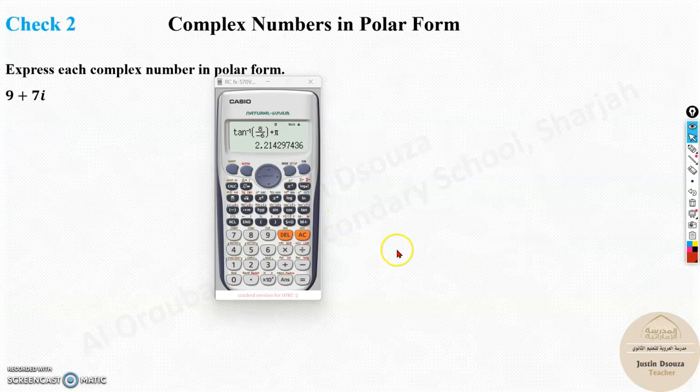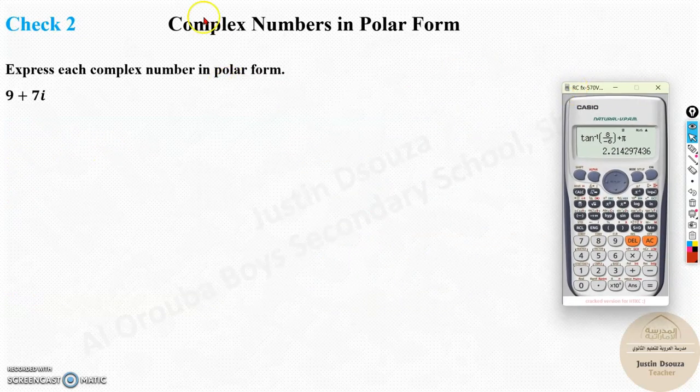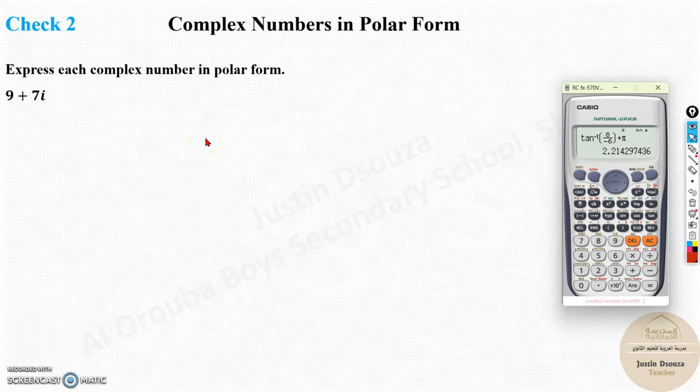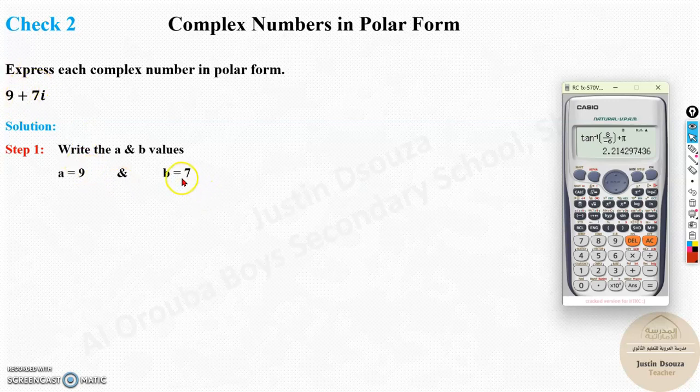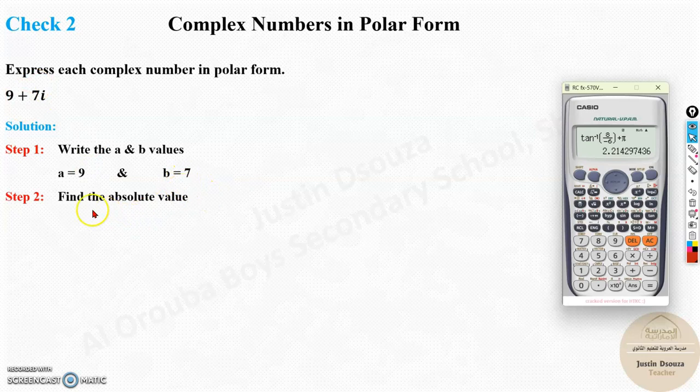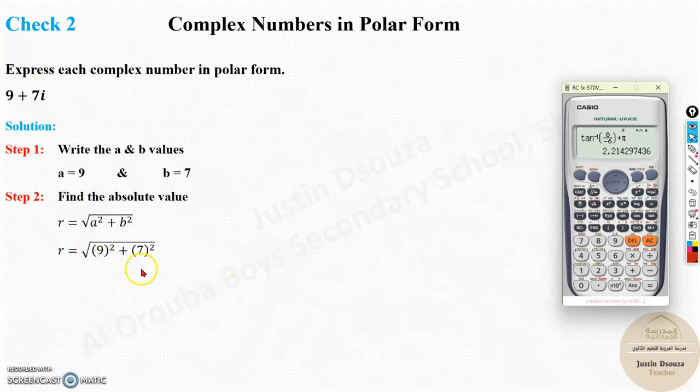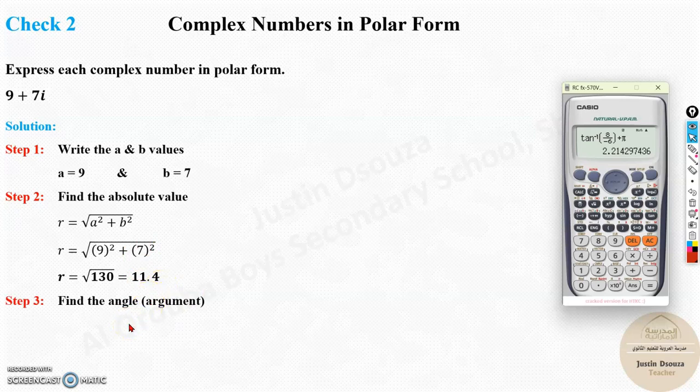We will do one more problem. Now, please pause the video for this problem and do it by yourself. I hope some of you at least tried it by pausing the video. Now, let us solve this over here. Most important thing is r and theta. a value is 9, b value is 7. And look over here. Absolute value is square root of a squared plus b squared. So, it's a direct substitution. Put it in the calculator. You'll get the answer.